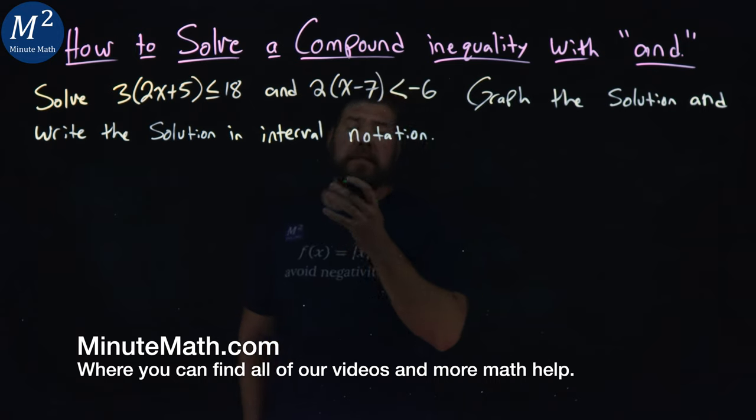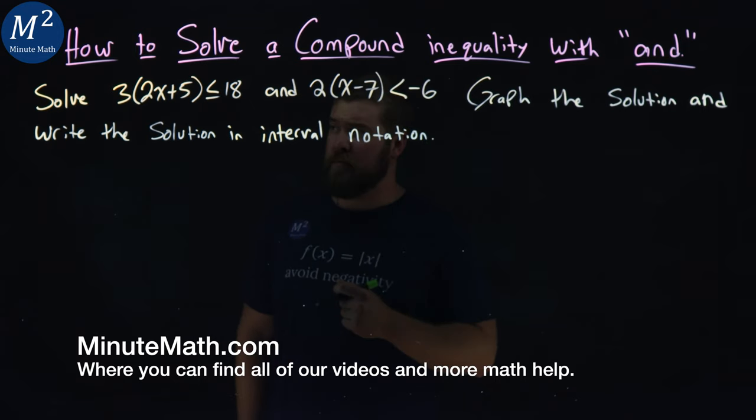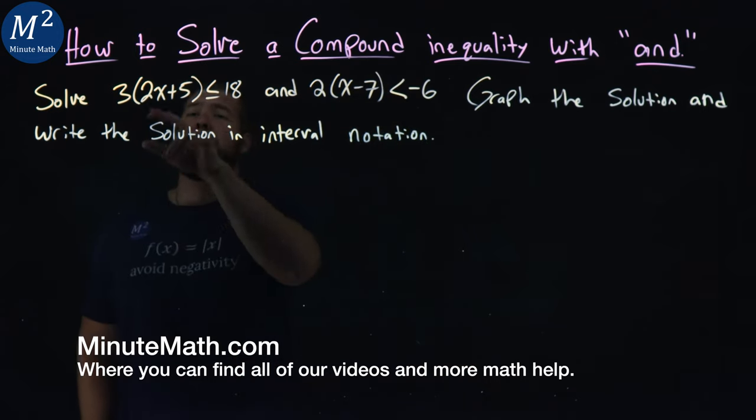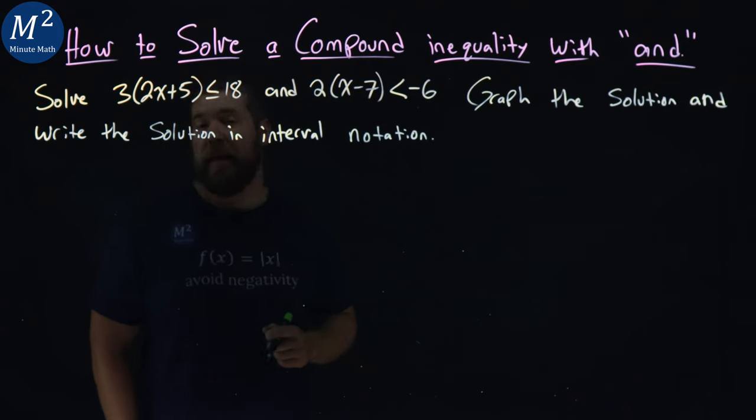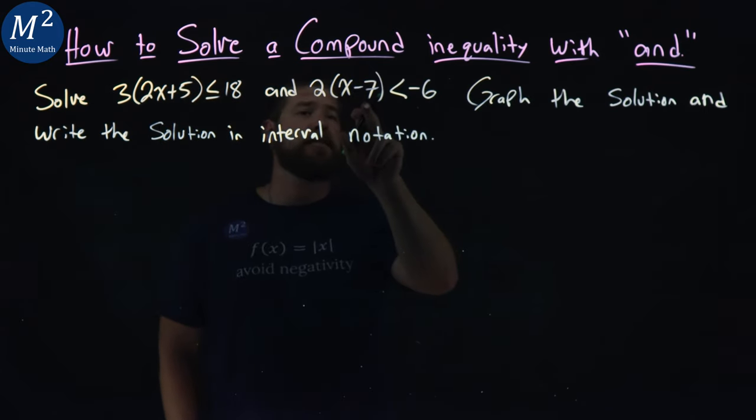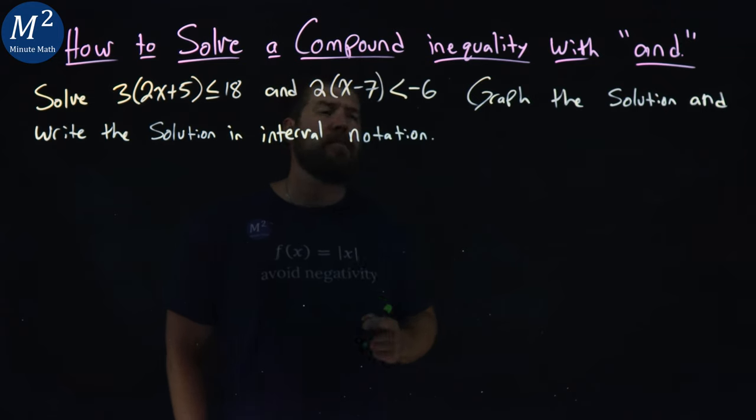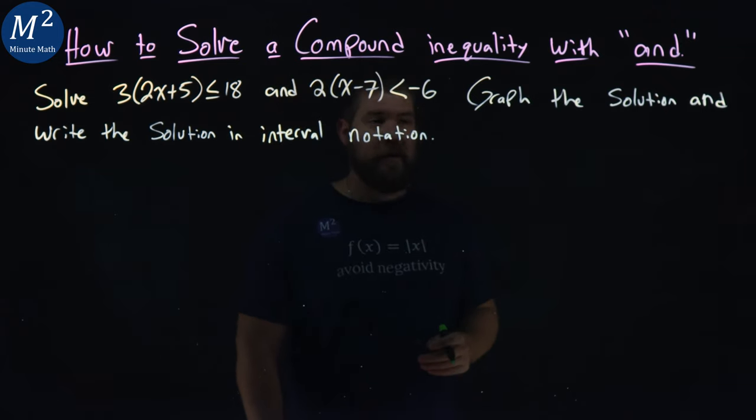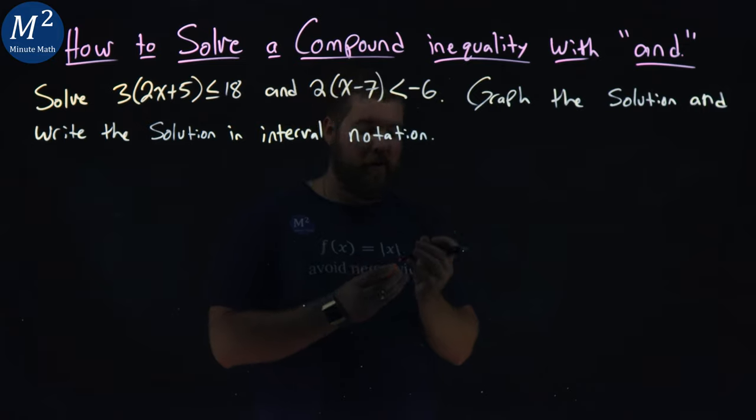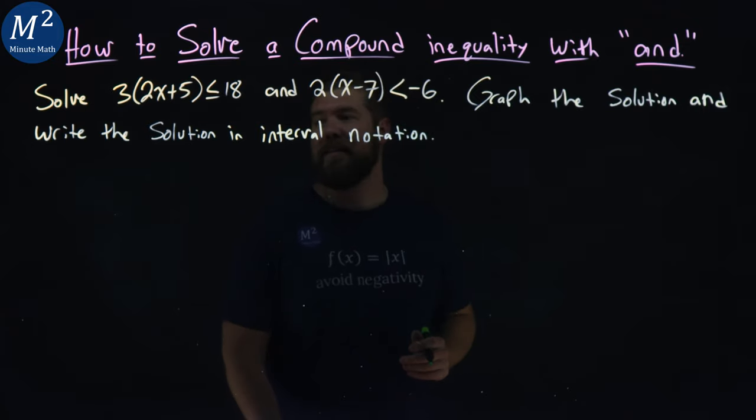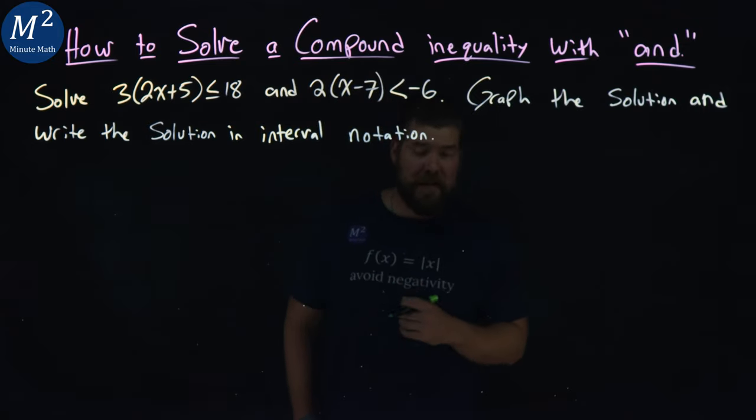We're given this problem here. It's a little more difficult than our previous problem. Solve 3(2x+5) is less than or equal to 18, and 2(x-7) is less than -6. We want to graph the solution and write the solution in interval notation.